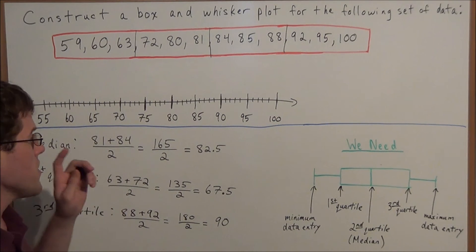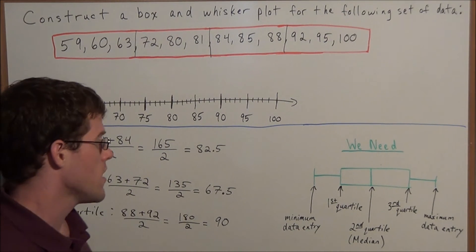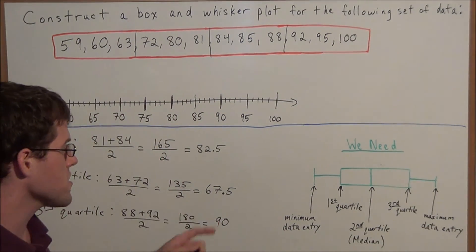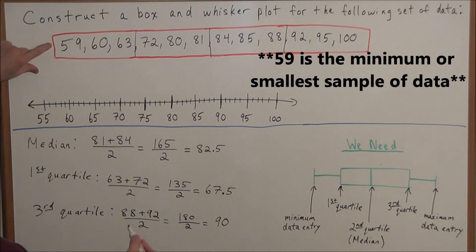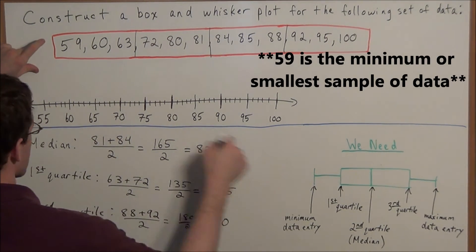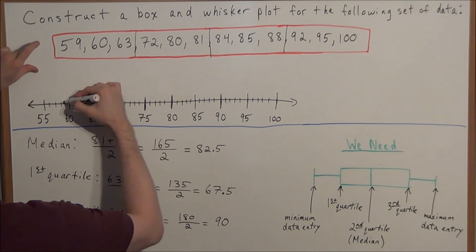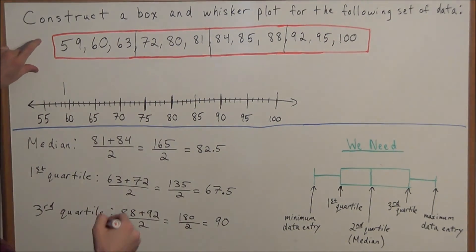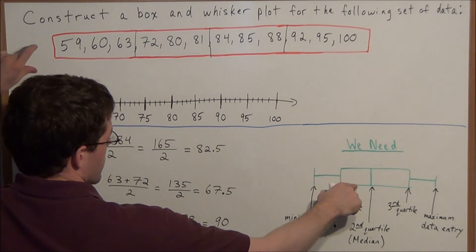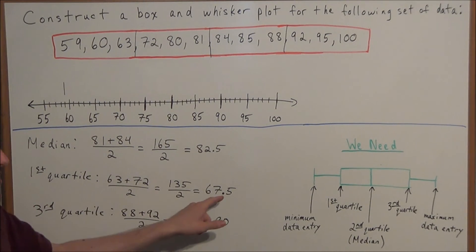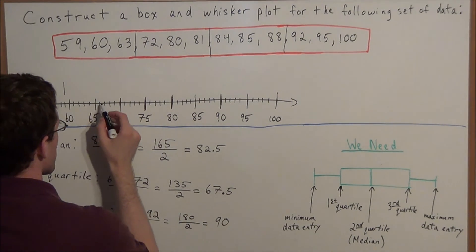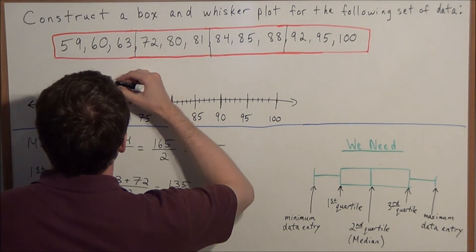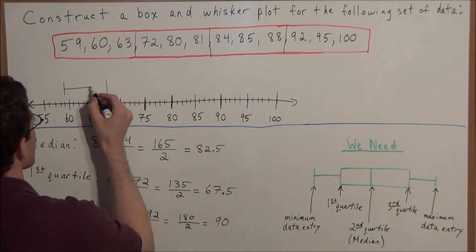We now have enough information to construct the box and whisker plot. The minimum and maximum data entries are easy to identify. The data starts at 59, so we mark our first whisker at 59 on the number line. The box begins at the first quartile, 67.5, so we mark that on the number line as the beginning of the box.